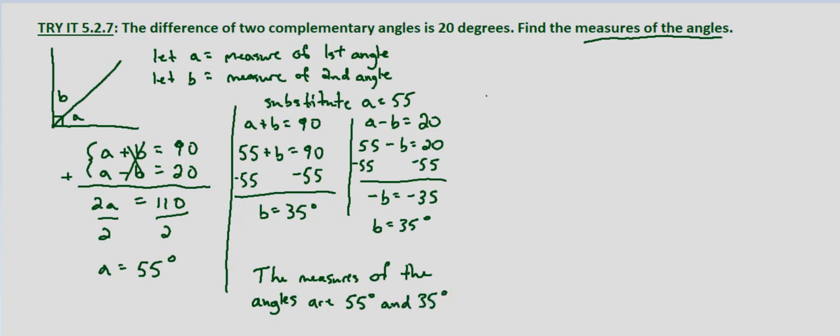So let's go ahead and check. We do that by making sure that both of our solutions make both of our equations true statements. So A plus B equals 90. So does 55 plus 35 equal 90? And yes it does. 90 equals 90. 55 plus 35 is 90.